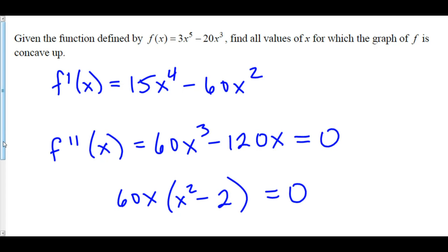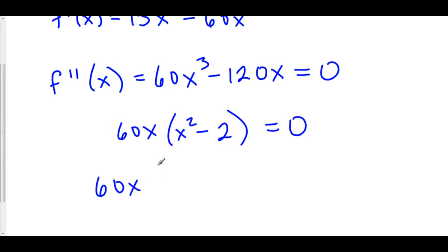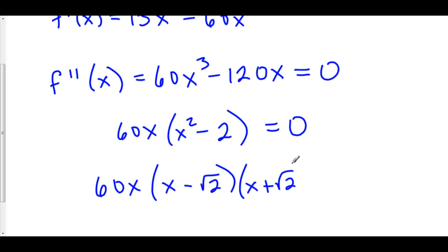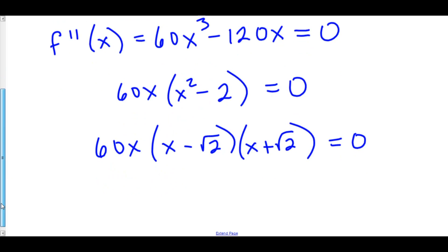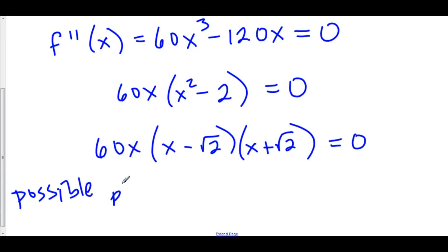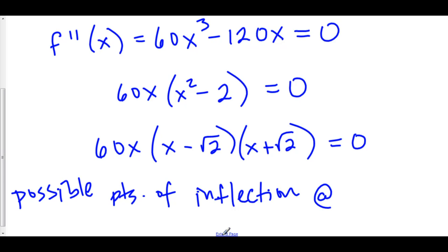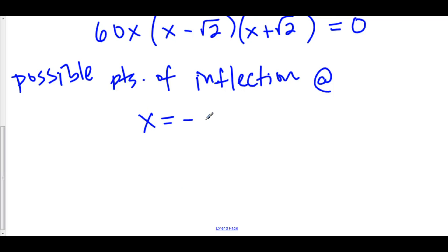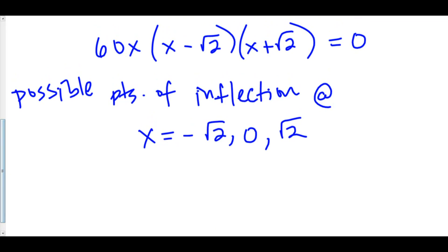We can factor out 60x, leaving us with x² - 2, and this equals zero. We can factor further: 60x times (x - √2) times (x + √2). That means we have possible points of inflection at x = -√2, x = 0, and x = √2. To determine whether these are points of inflection, we need to do our line analysis.